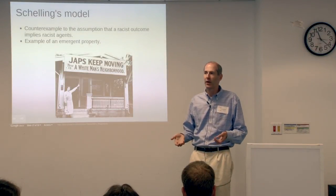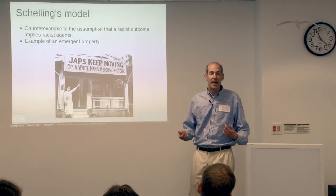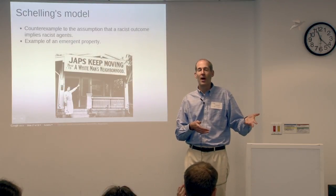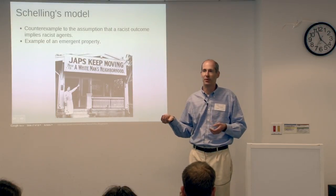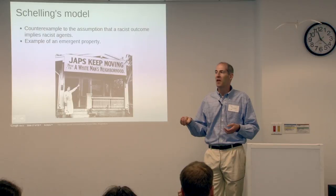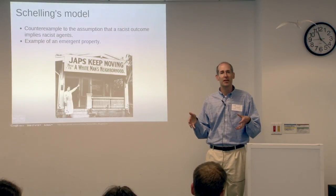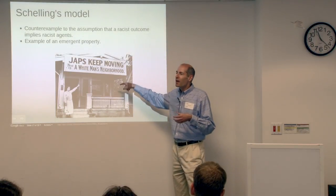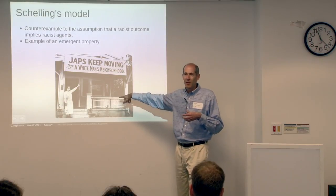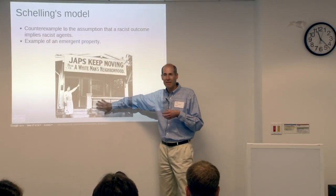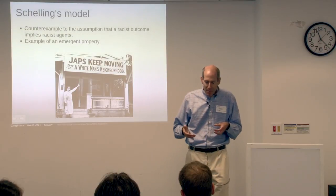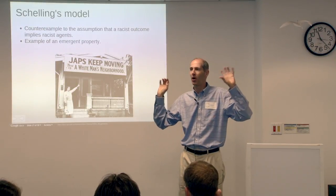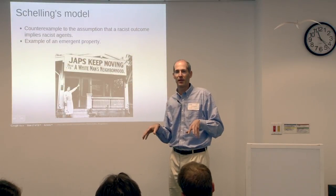So what kind of work does Schelling's model do? It's not a proof, and it has very little predictive power — I can't use it to tell you how segregated Boston will be in the future. But it provides a logical argument, an existence proof or counter-example to the assumption that if you see segregation in a city the people there must be racists. The claim is that mildly xenophobic behavior might be sufficient to cause segregation, but it's not necessary. What that means is that segregation could be an emergent property — the system as a whole has that property, but the individual components, the agents, might not be racist.